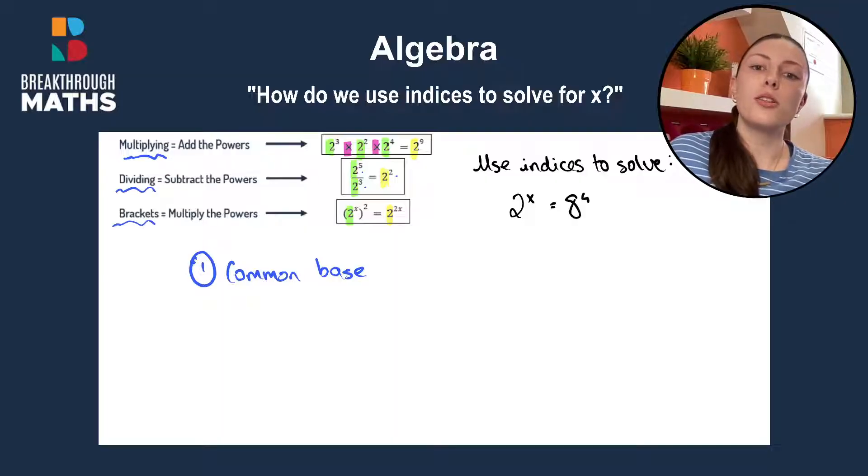Finally, when we have brackets, you multiply the powers. So here we have x by 2 which is 2x, keeping the common base of 2. So once you have the common base, you can write that down for your answer and all you're worried about then is figuring out the powers.